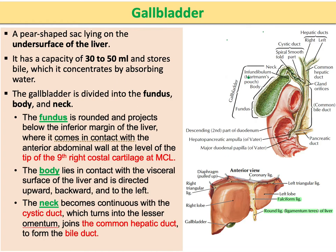Now let us talk about the gallbladder itself. The gallbladder is a pear-shaped sac located under the visceral surface of the liver. It can contain up to 50 milliliters of bile, which is stored and concentrated inside. Anatomically, the gallbladder is divided into three parts: the fundus, the body, and the neck.